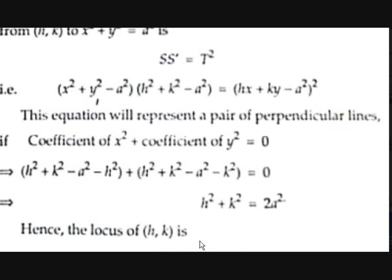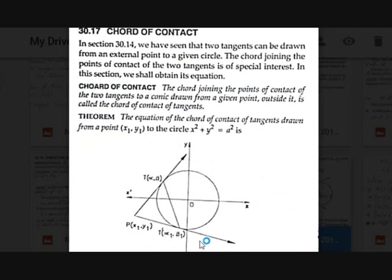Now the concept of chord of contact. In the previous section, two tangents can be drawn from an external point to a given circle. The chord joining the points of contact of those two tangents is of special interest. The chord of contact is the chord joining the points of contact of two tangents to a conic drawn from a given external point.